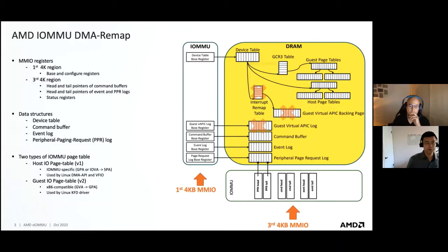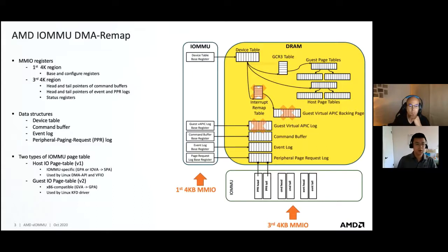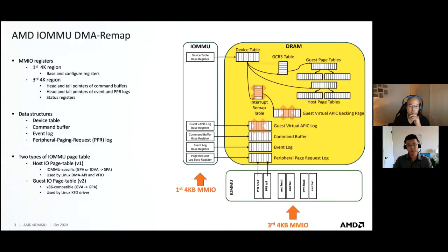The main functionality for IOMMU is DMA remap. AMD IOMMU supports two types of IOMMU page table. The first one is the host IOMMU page table, currently used by Linux DMA API and VFIO, called the V1 page table. This table does a translation from GPA to SPA. The second page table is called V2 table, which supports the x86 CPU page table format and is currently used by the Linux KFT driver.